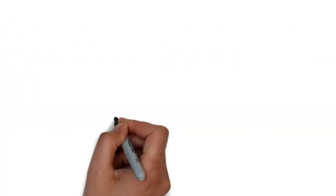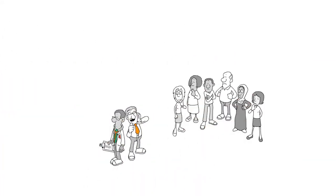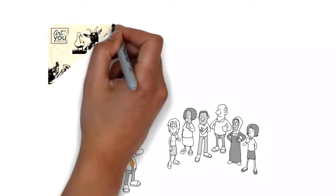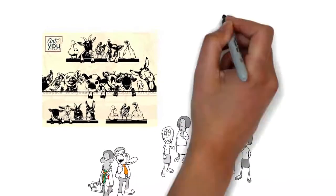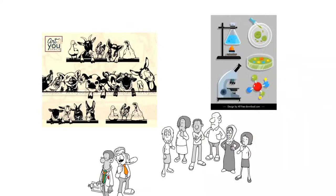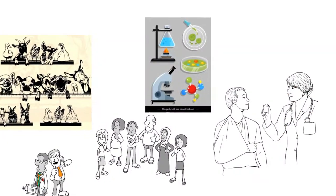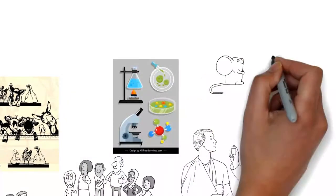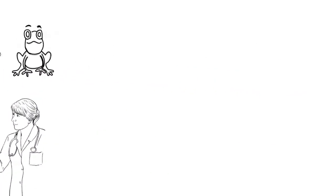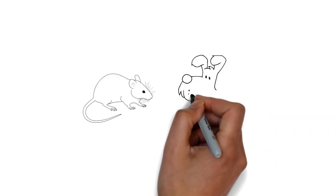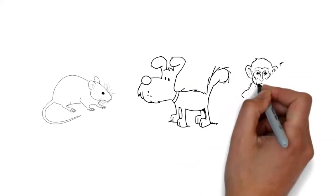Such ethical objections arise more the greater the resemblance is between the animal used in the experiment and humans. So, even when on purely scientific grounds it is preferable to work with a human-like model organism, practical considerations force us to test on smaller and more different animals. For this reason, mice are preferred over dogs, dogs over monkeys, and monkeys over apes.